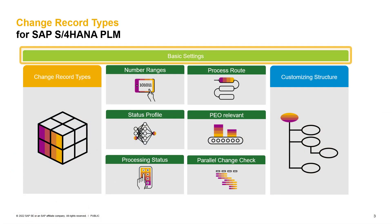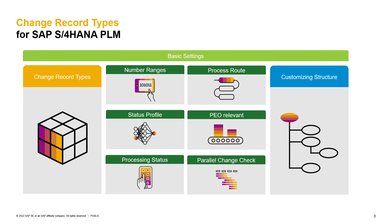The setting up of change record types is mainly part of the basic settings when setting up your system. Change record types put all the different kinds of functionalities together into one framework. Therefore, you need to think about your business process before you decide which kind of functionalities you want to cover for which change record type.